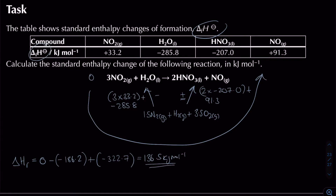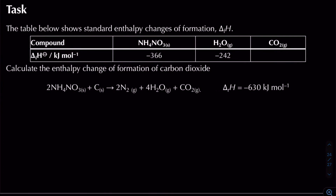In the next question, one of the enthalpy changes of formation is missing — we need to work backwards. We're given a standard enthalpy change of reaction and a table of ΔHf values, but CO₂ is not listed. Drawing the cycle: elements in standard states are 2N₂(g), 3O₂(g), 4H₂(g), and 1C(s).